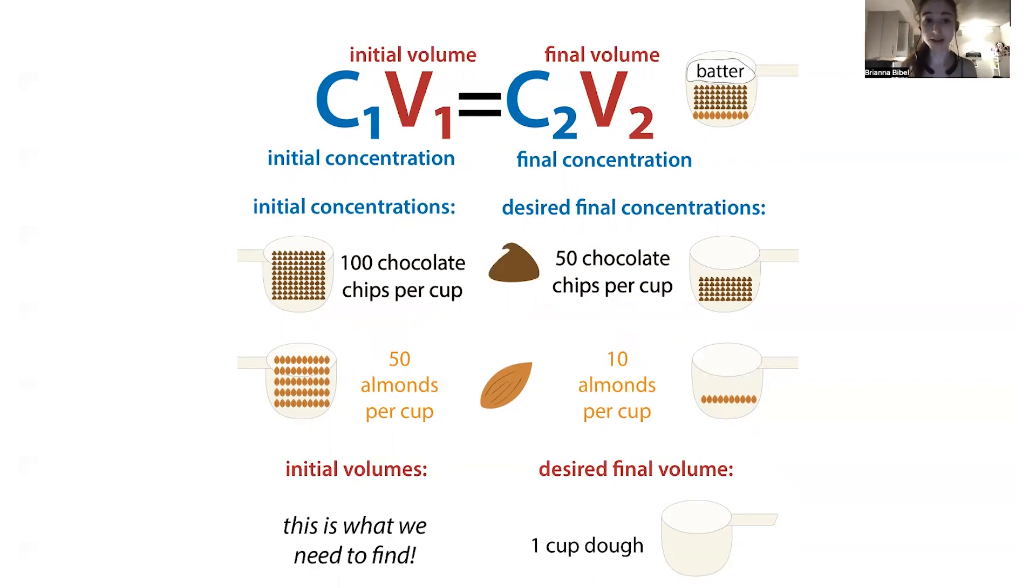Let's start off with some fun. Say we want to make chocolate chip almond cookies. We can use this equation to figure out the amount we need to add of each of the different components. Say we want to make a cup of dough that has 50 chocolate chips per cup and 10 almonds per cup. These will be our stock solutions - the concentrated version. We have 100 chocolate chips per cup and 50 almonds per cup. These are going to be our initial concentrations. We know our final desired concentrations, we know our desired final volume of one cup, but we need to figure out our initial volumes.